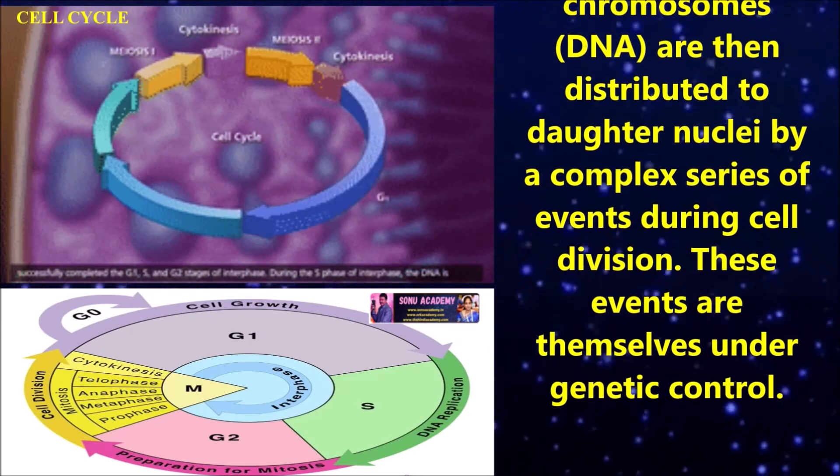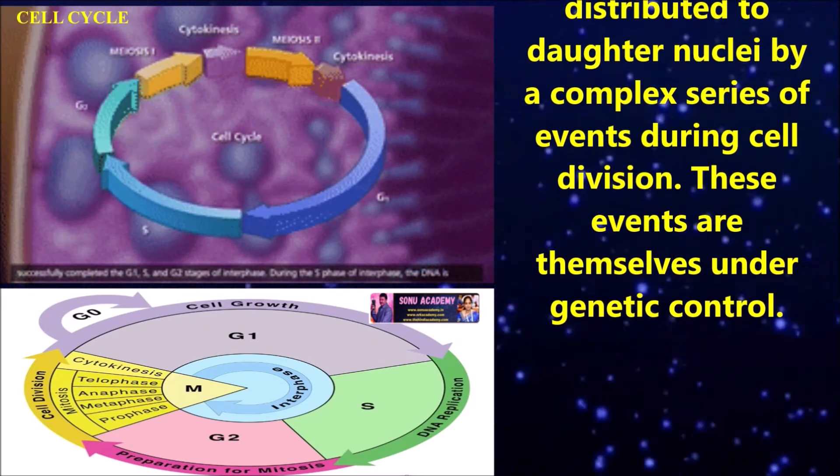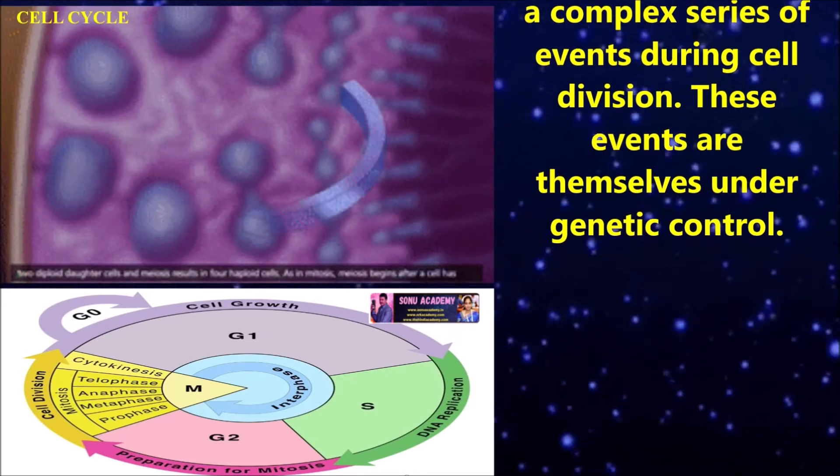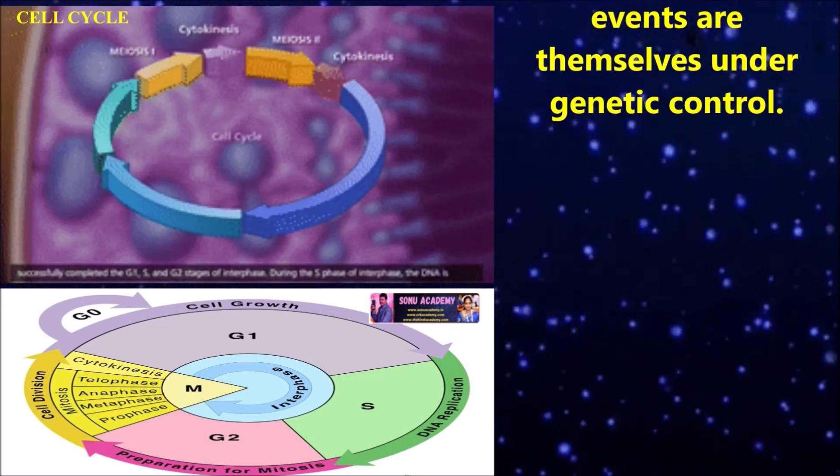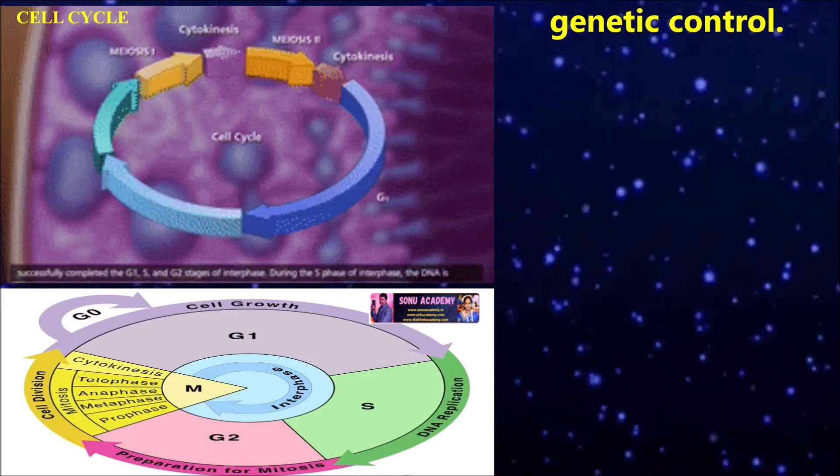The replicated chromosomes DNA are then distributed to daughter nuclei by a complex series of events during cell division. These events are themselves under genetic control.